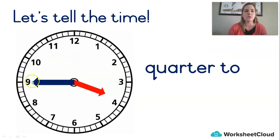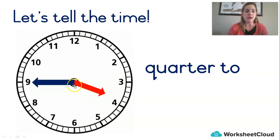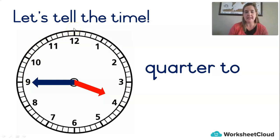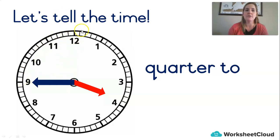The other one is quarter to. You can see there are 15 minutes to go before it changes the hour — before it's 4 o'clock. So we've moved on from 3 o'clock and we're moving towards the next hour. It's almost 4 o'clock, so we say it's quarter to 4. Do you remember how many minutes in an hour? 60. And what's a quarter of 60? 15. It's 15 minutes to 4 o'clock, but we say quarter to 4.